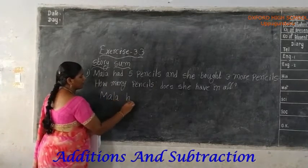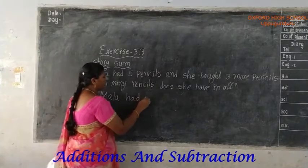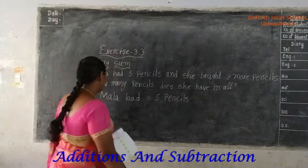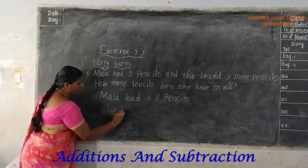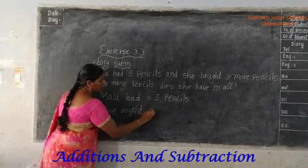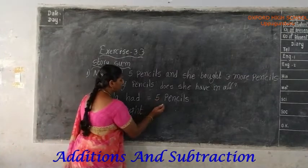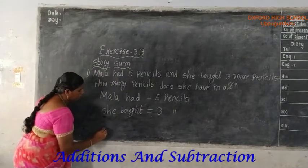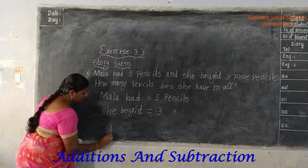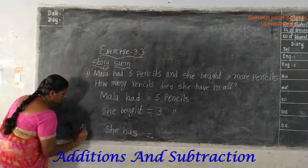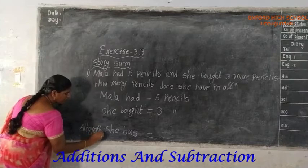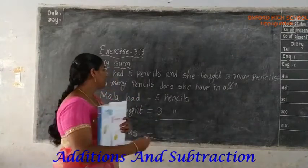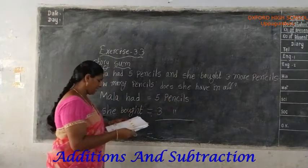Mala had 5 pencils. How many she had? 5 pencils. She bought 3 pencils. How many she bought? 3 pencils. All together she has dash. We want to calculate the total. See this — we are using the vertical method.